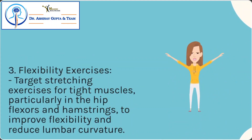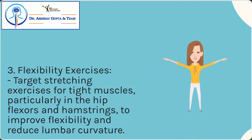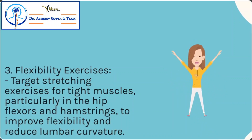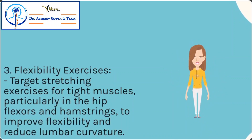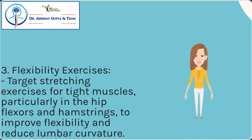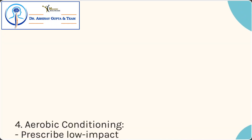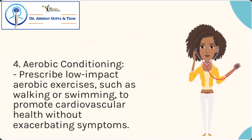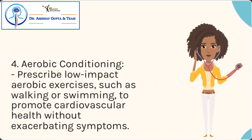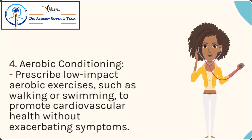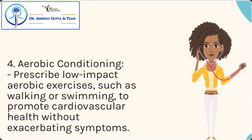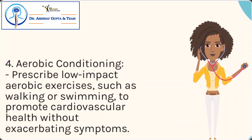Flexibility exercises target stretching exercises for tight muscles, particularly in the hip flexors and hamstrings, to improve flexibility and reduce lumbar curvature. Aerobic conditioning prescribes low-impact aerobic exercises such as walking or swimming to promote cardiovascular health without exacerbating symptoms.